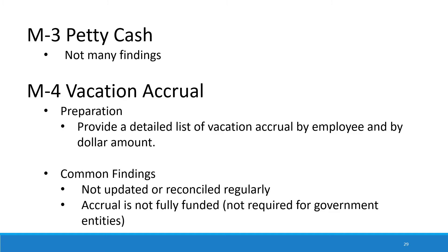When we move on to vacation accrual, what we would like to see is a detailed list of vacation accrual by employee and by dollar amount. We only need to see this for OCA funded programs — meaning LIHEAP, weatherization, and CSBG. There's no need for you to provide any other programs. What we commonly find is that your vacation accrual hasn't been updated or reconciled on a regular basis, and also that your accrual is not fully funded. That is not required for government entities or for you — it is just a recommendation if your agency sometimes struggles with cash that you have a separate bank account to fund the total accrued vacation on hand.